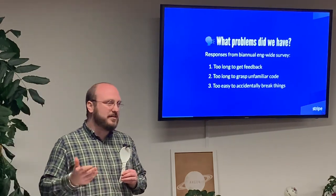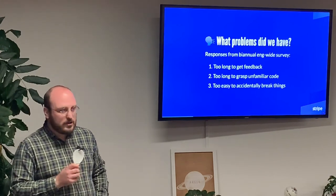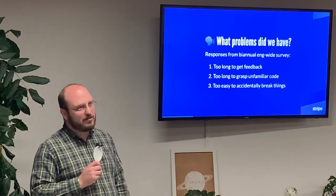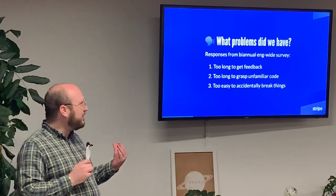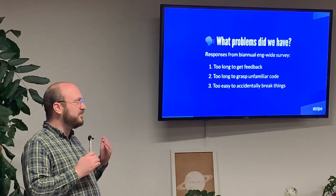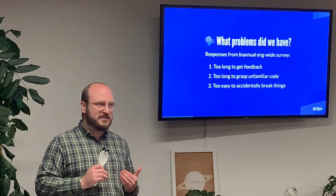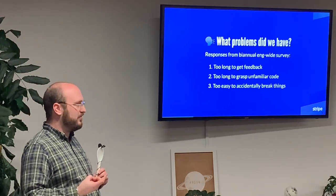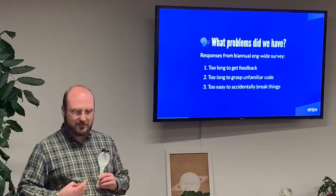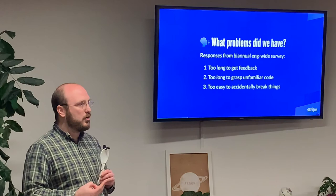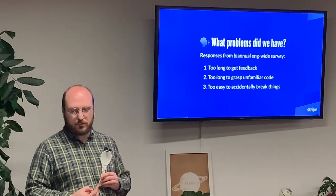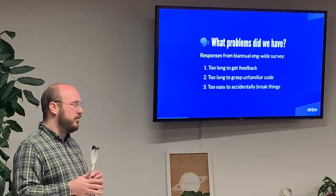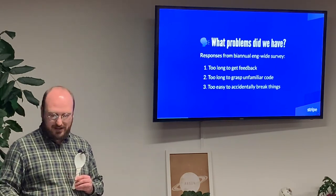Something that developer productivity does every six months or so — many teams do this — is a survey. We ask everyone in the engineering org: what are we doing well? What can we be doing better? When we did this a couple of years ago, we kept getting very consistent pieces of feedback. There were three major pain points that came up all the time. The first is that it took too long to get feedback about the code. The second is that going into an unfamiliar part of the codebase took too long. And the third was that it was way too easy to accidentally break things.